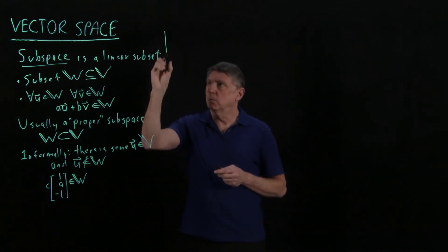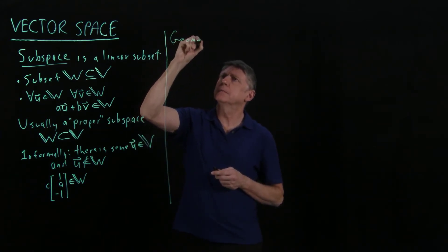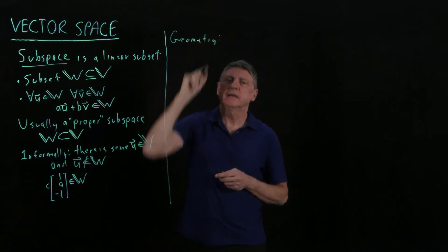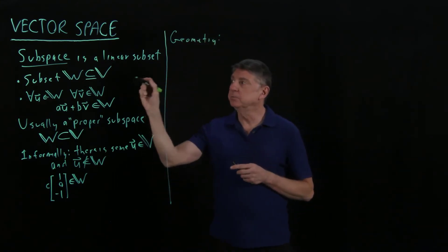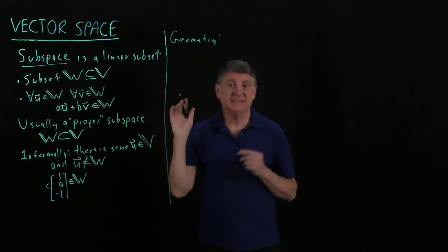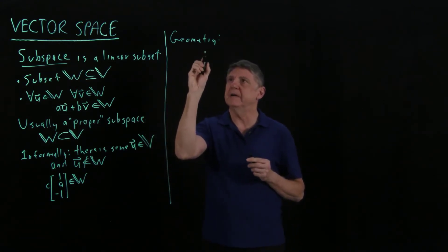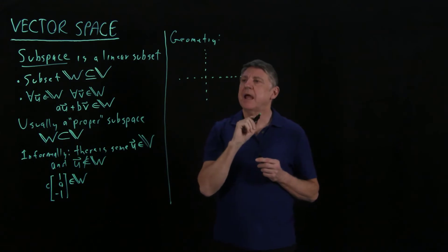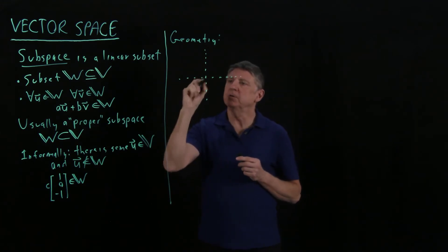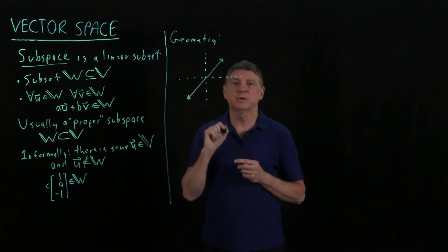Now, what is the geometry of this? Well, the geometry is that it has to still be, so a subspace is a vector space, right? So suppose that we have coordinates, so we have a 2D example, and suppose that we have an infinitely extending line that goes through the origin.